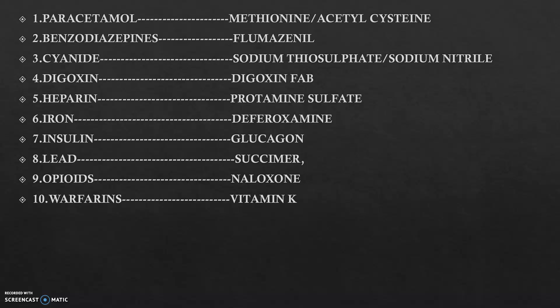In case of insulin, glucagon is the antidote, and in case of glucagon, insulin is the antidote. In case of lead poisoning, succimer is the antidote. And whenever opioid poisoning happens — opioids are commonly used in drug abuse in many cases — naloxone is the antidote.